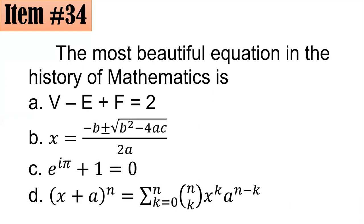Item 34. The most beautiful equation in the history of mathematics is which of this? Is it letter A, the formula for Euler's formula for polyhedra, the quadratic formula, e^(iπ) + 1 = 0, or the binomial expansion?